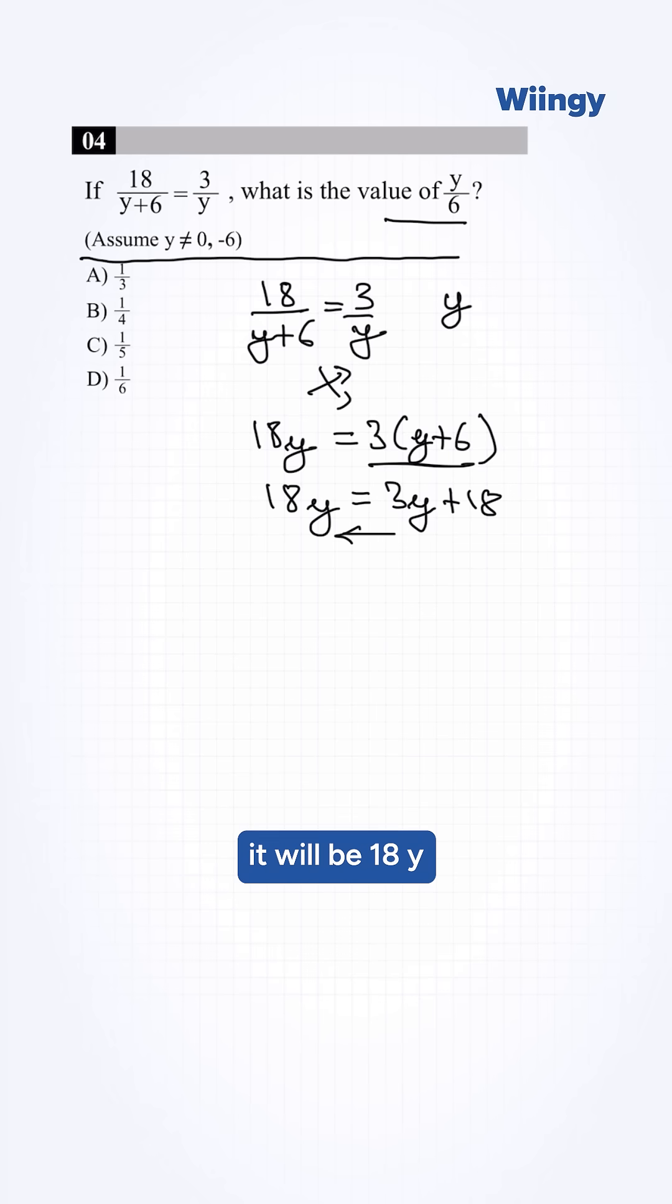Combining the like terms, it will be 18y minus 3y is equal to 18. Simplifying this, 15y is equal to 18.